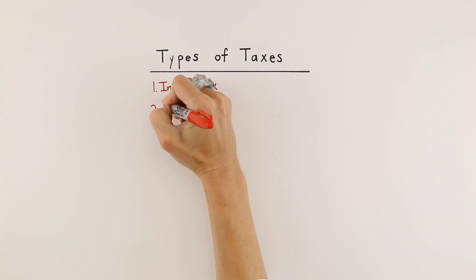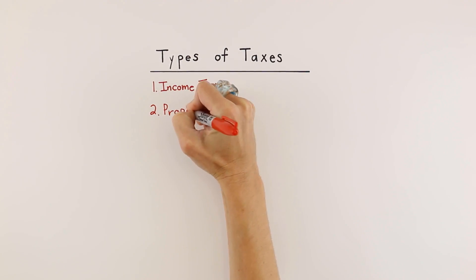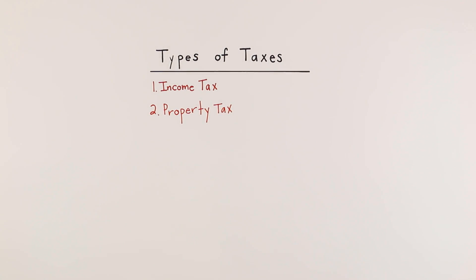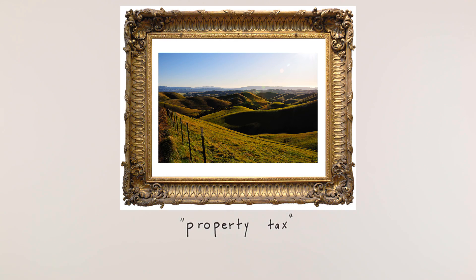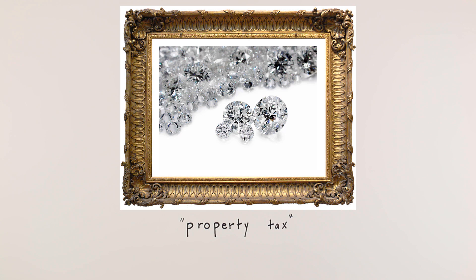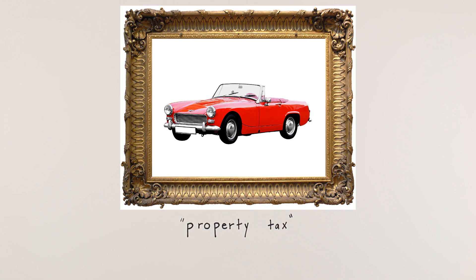The second type of tax we will learn about today is property tax. Property tax is tax paid on property, most commonly real estate like land and houses, but sometimes on other types of expensive property like jewelry or cars.